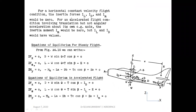For horizontal constant velocity flight, the inertia forces IL, ID, and IM are all zero. For flight conditions involving translation but not angular accelerations about the CG axis, IM is zero while IL and ID have some values. For steady flight equilibrium, the inertia forces do not come into the picture at all.